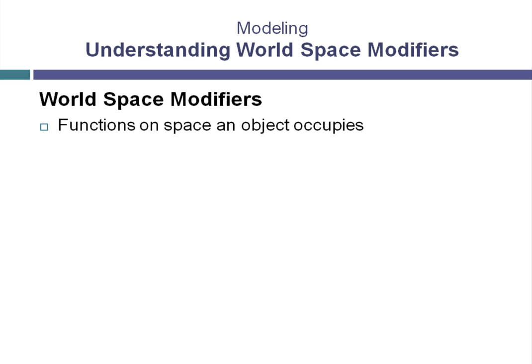We are going to use a world space modifier as a material option to map roof shingles to the sides of our hip roof, regardless of the orientation of the roof's faces in space. The modifier that we'll apply is called a map scaler modifier. It defines the space that the object exists in and works directly on the pattern in the roof shingle material so that it will be projected perpendicular to any surface, regardless of the direction of that surface.